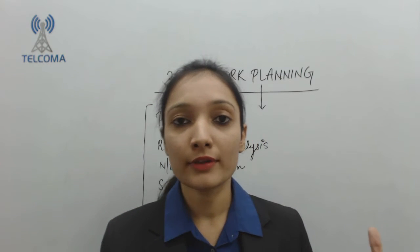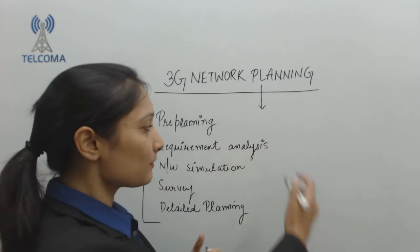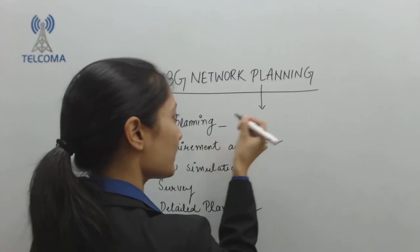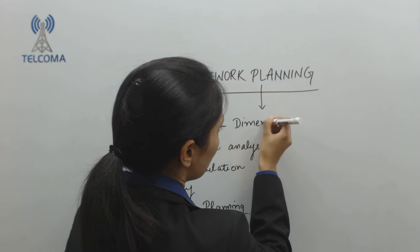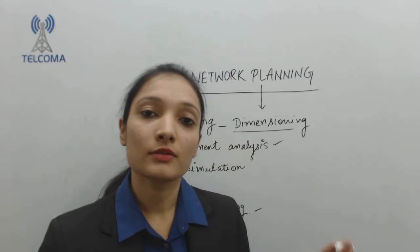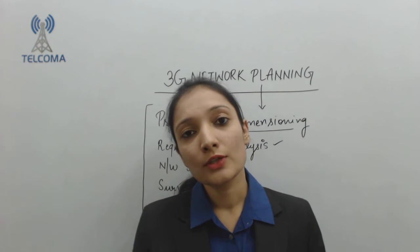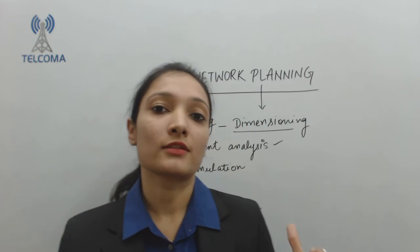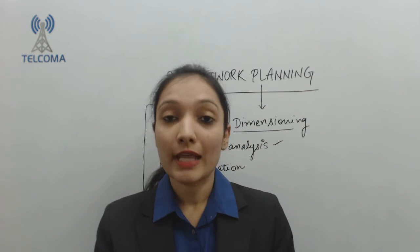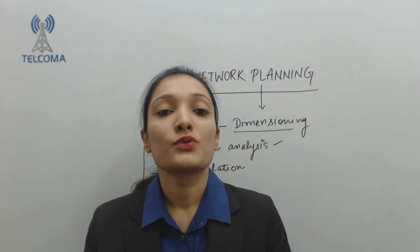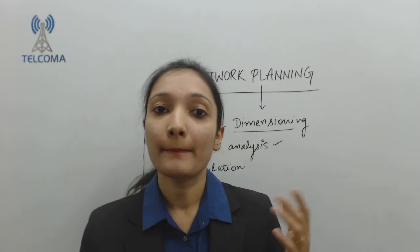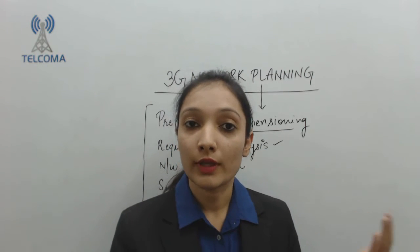Starting with pre-planning — this is the phase carried out before the detailed planning of a particular network. Here we check the basic dimensioning of the network according to coverage and capacity, because when planning a new network, coverage and capacity are the two important factors to consider. The Node B's deployed should cover the area properly and handle traffic capacity in a good manner.